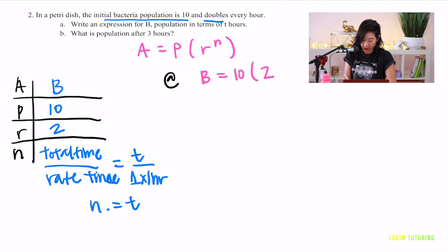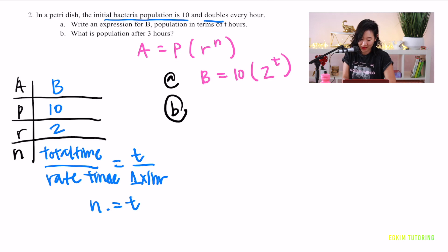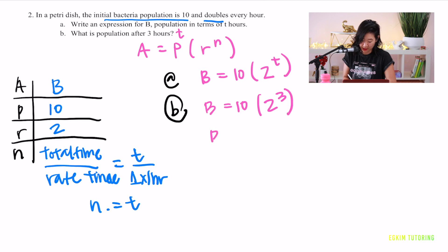For part a, the expression is b equals 10 times (2 to the power of t). For part b, the population after 3 hours: plug in t equals 3, giving b equals 10 times (2 cubed) equals 10 times 8, so the population is 80.